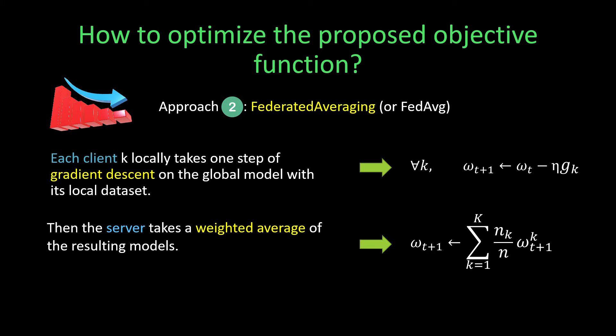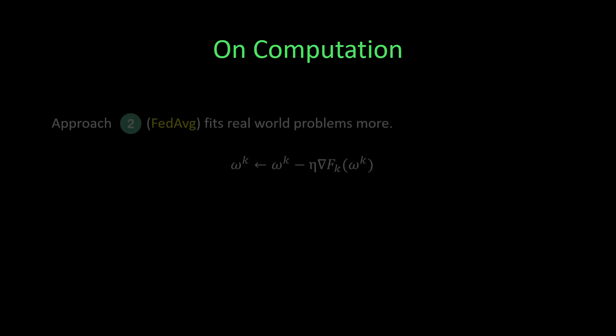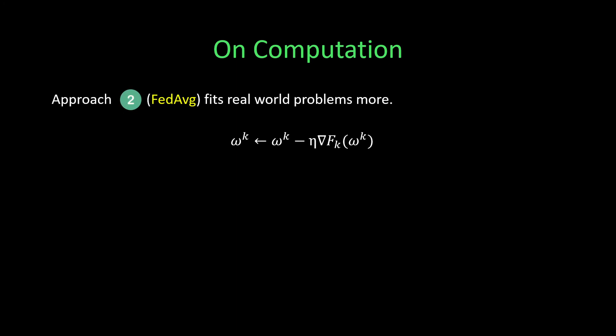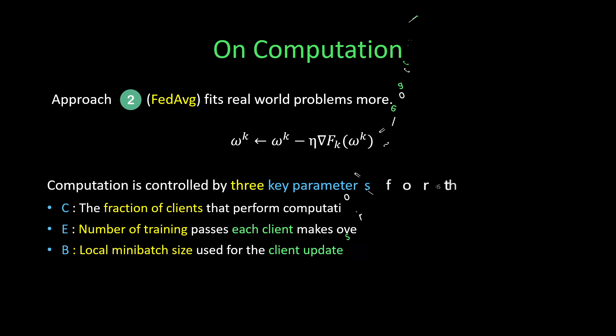This is called federated averaging. The second approach fits real-world problems more, which is why this strategy was selected for experiments. Computation is controlled by three key parameters for this approach. The first key parameter is C, the fraction of clients that perform computation on each round. The second is E, the number of training passes each client makes over its local dataset on each round.